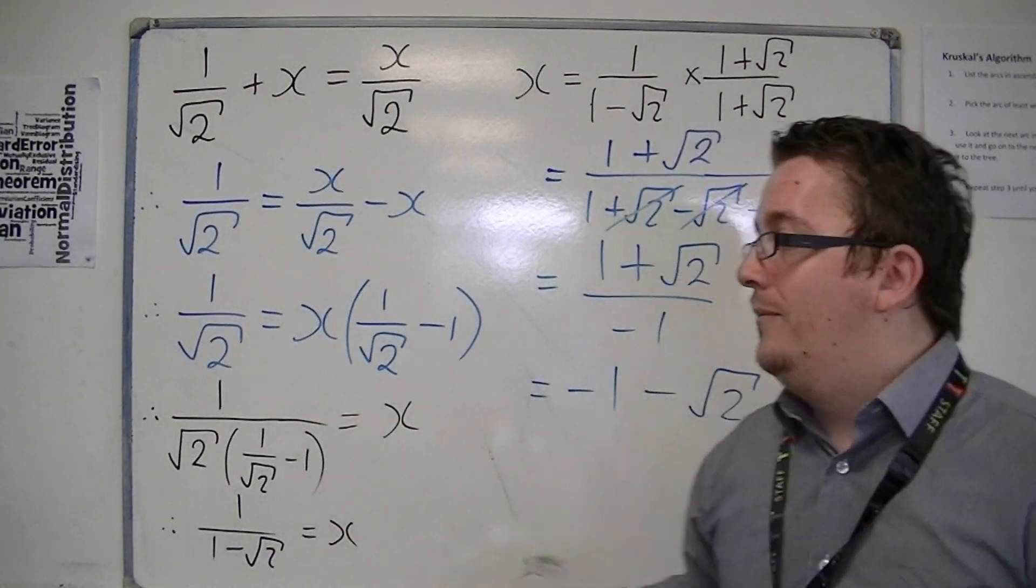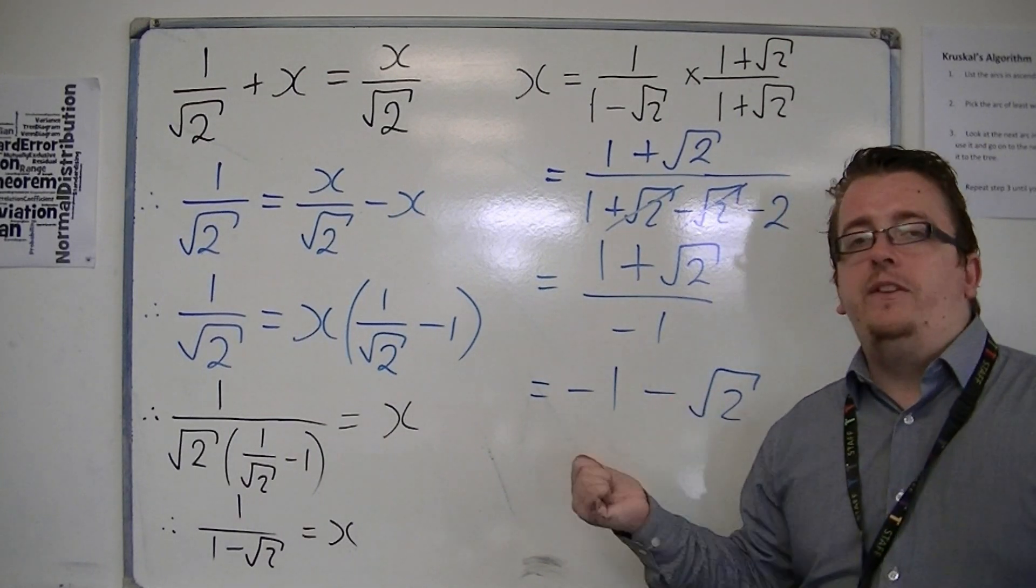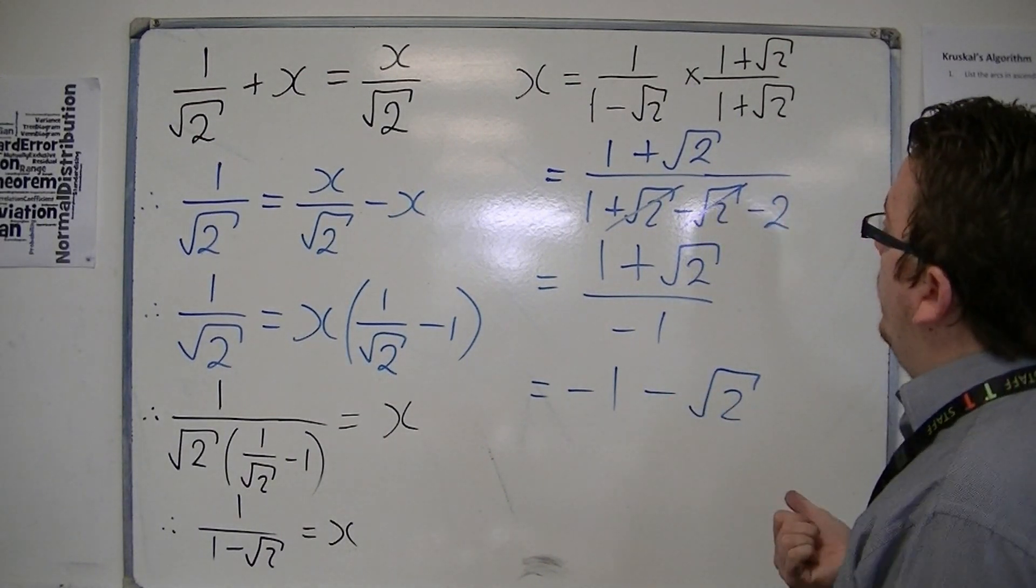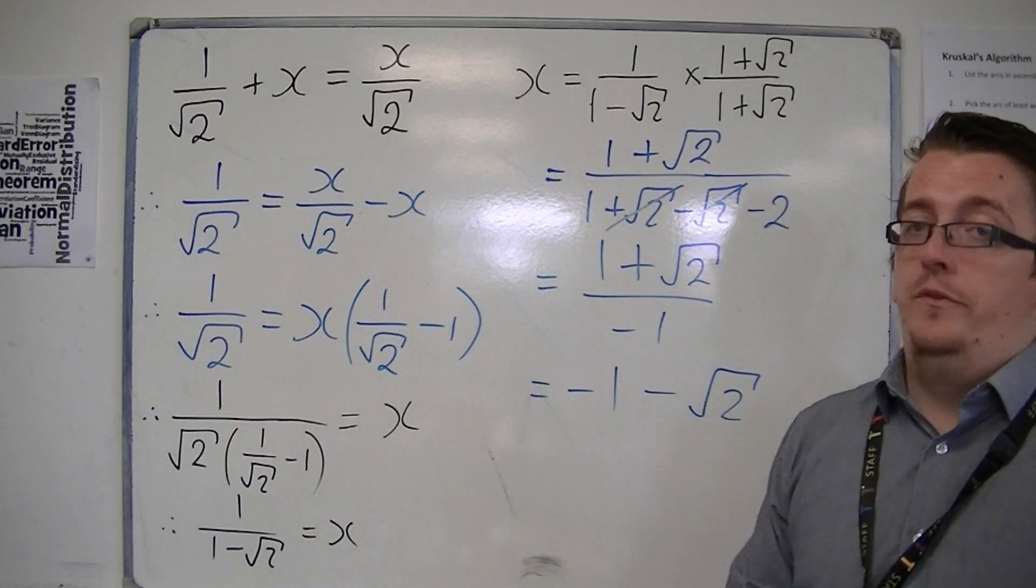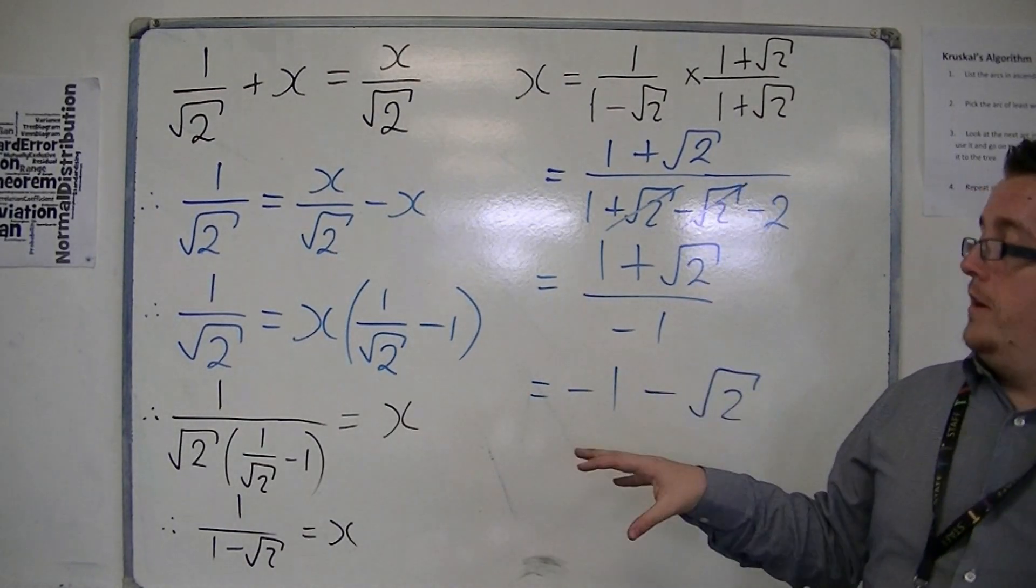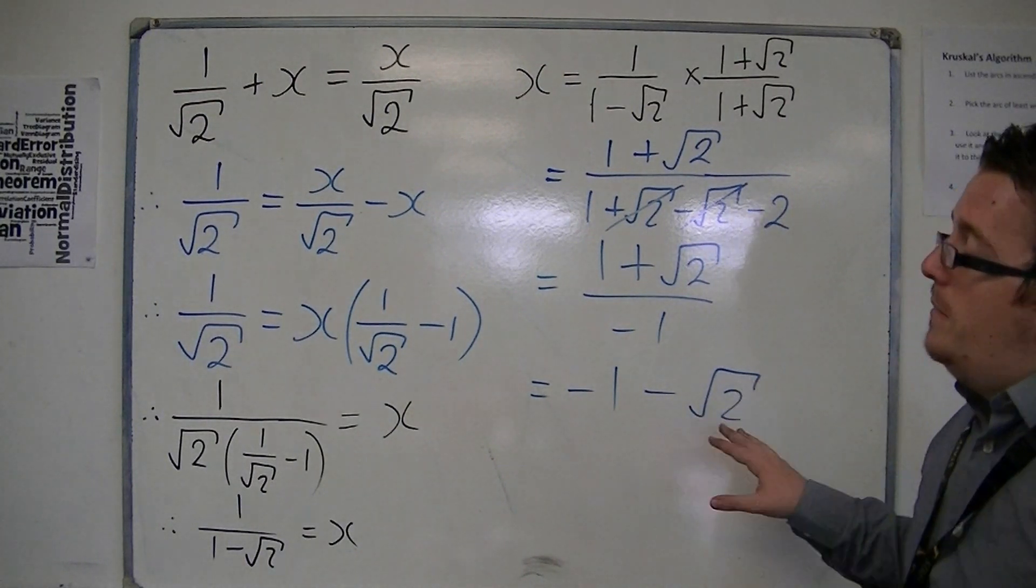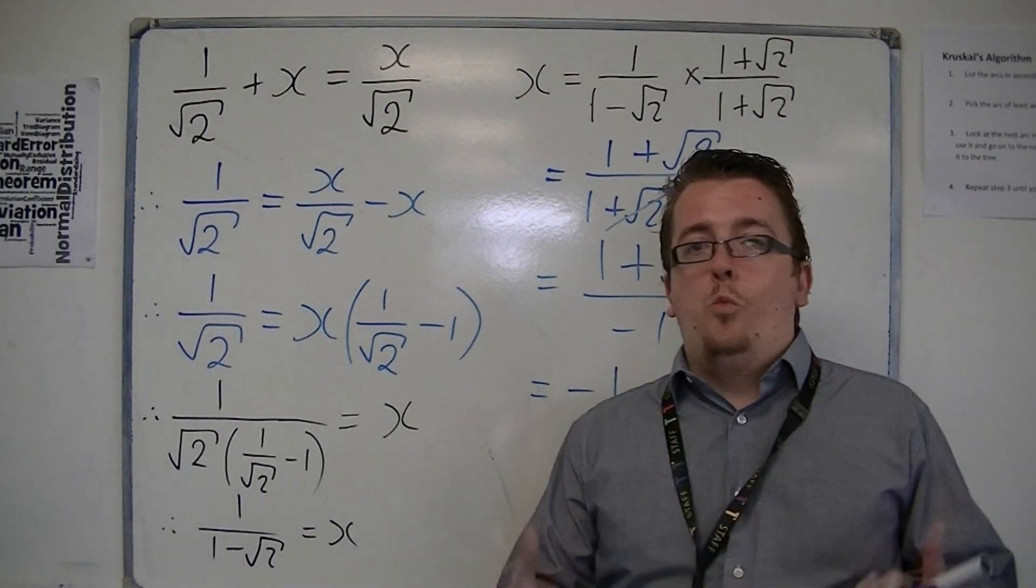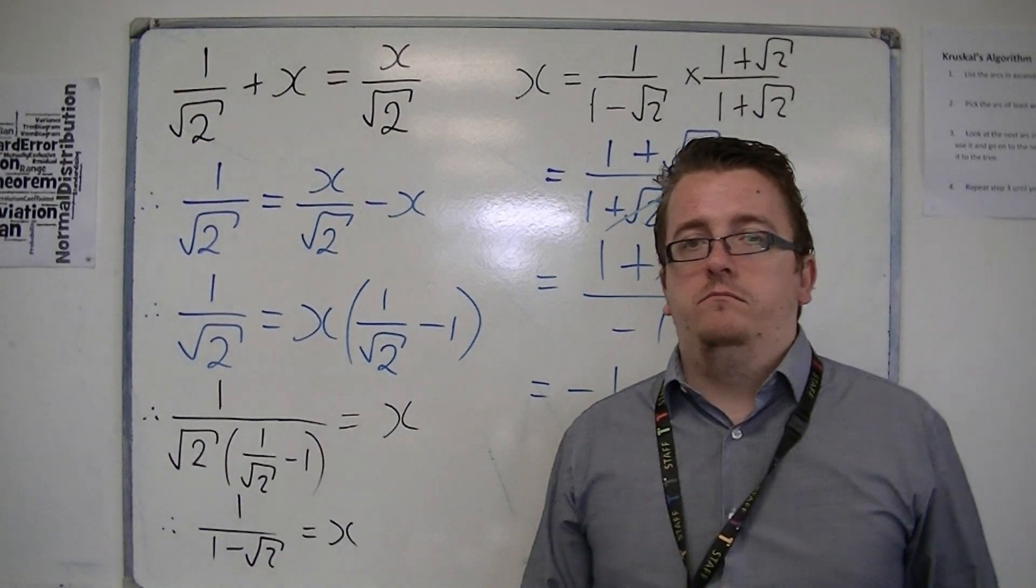And actually, when it came down to it, that was probably the easier way of doing it, because you didn't have to deal with any of the half root 2's or anything like that. Both methods work. Both methods get to the same answer, but one is more tricky than the other.